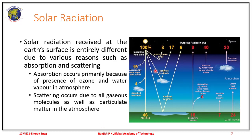The solar radiation received at the earth's surface is entirely different from that available in the atmosphere. This is attributed to reasons such as absorption and scattering. Absorption occurs primarily because of the presence of ozone and water vapor in the atmosphere. Scattering occurs due to gaseous molecules as well as particulate matter present in the atmosphere. If you consider 100% of incoming solar radiation, only 46% is available to be absorbed at the ground level.